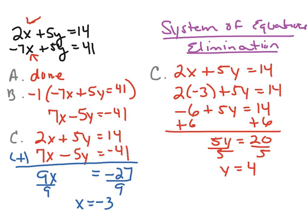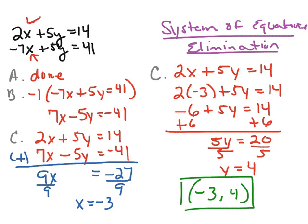To finish this, I'm going to write the answer as an ordered pair, and that ordered pair would be negative 3, positive 4. When writing ordered pairs, we must have the x value first, then the y value. So the solution to this system is the ordered pair negative 3, positive 4.